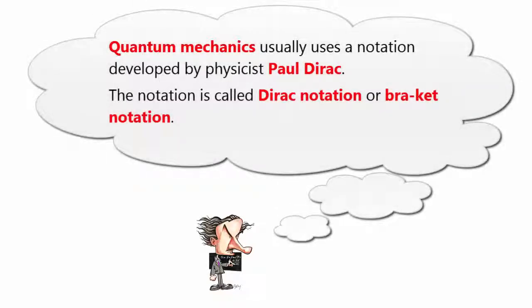Quantum mechanics usually uses a notation developed by physicist Paul Dirac. The notation is called Dirac notation or bracket notation.